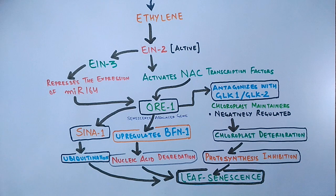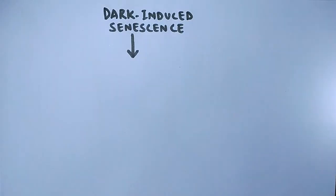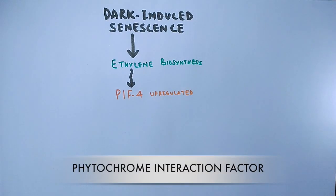So continuing the leaf senescence process in this way. Now let's have a brief look at dark-induced senescence. Here we also see the ethylene biosynthesis promotes the leaf senescence. The ethylene further activates and upregulates the PIF4 molecule, that's phytochrome interaction factor.